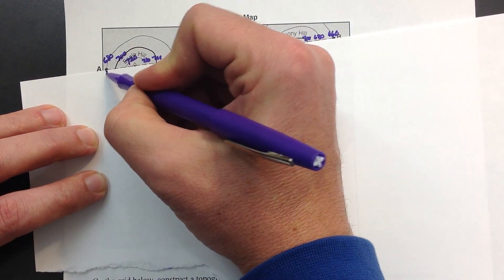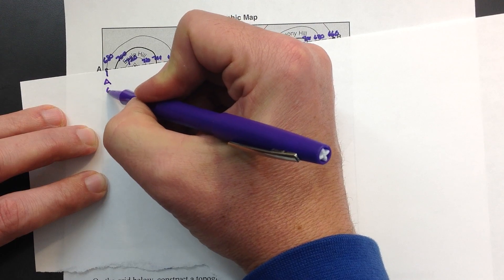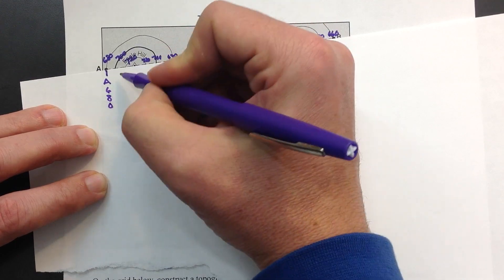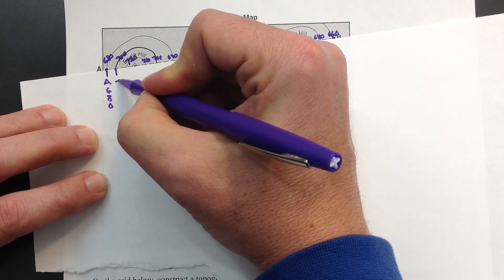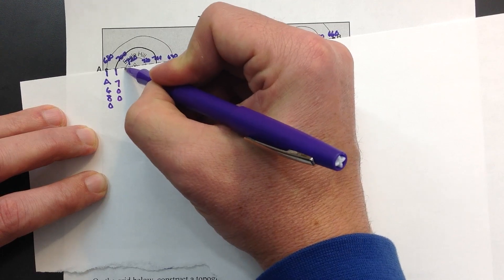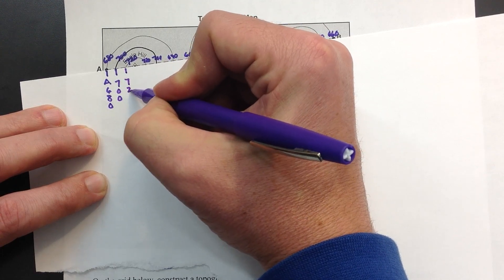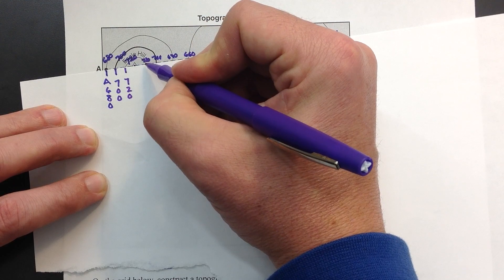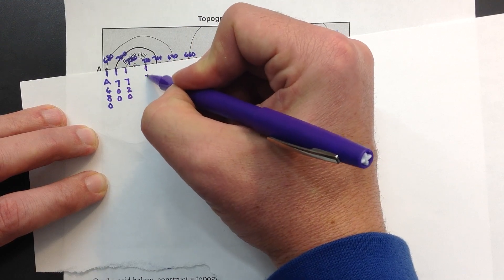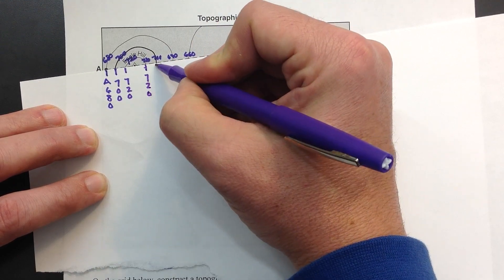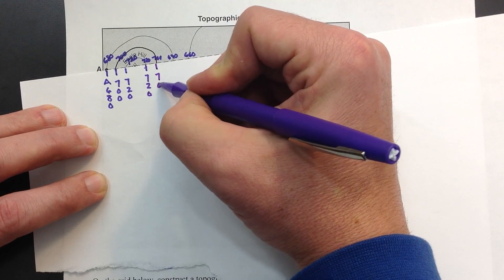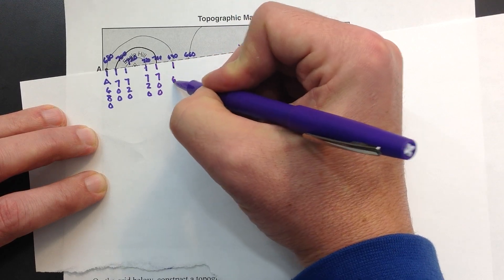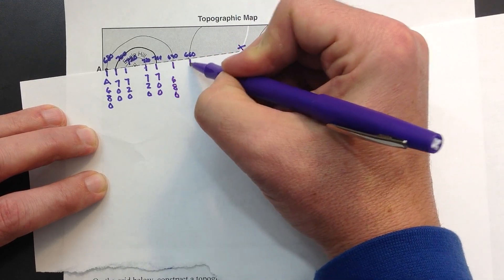So I'm going to mark off A, and that elevation is 680. This elevation right here is 700. 720. Now I'm going to duplicate 720. This is 720 here as well. We're going down the eastern side. So I'm going to include 700, 680, 660.